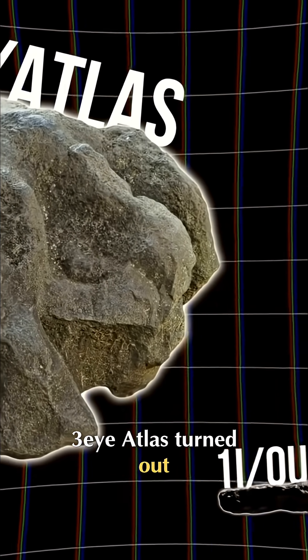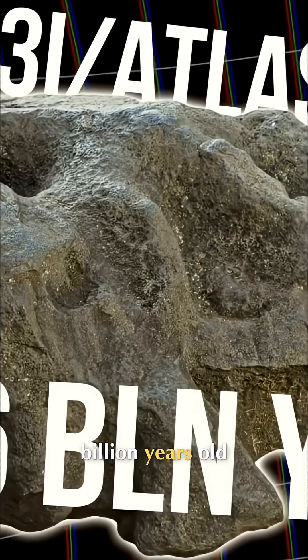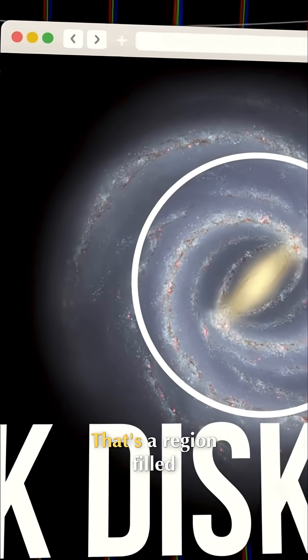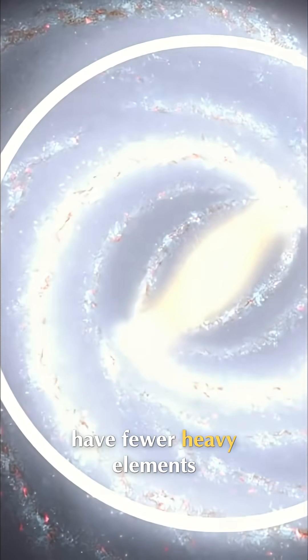Three-Eye Atlas turned out to be the oldest, about 4.6 billion years old, and it came from the Milky Way's thick disk—a region filled with older stars that have fewer heavy elements.